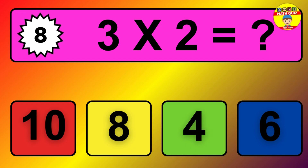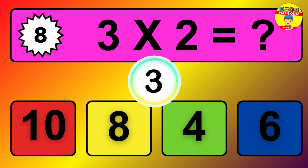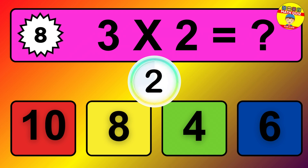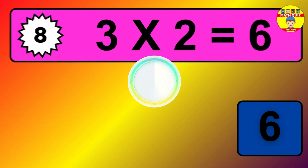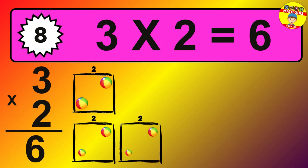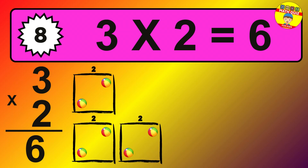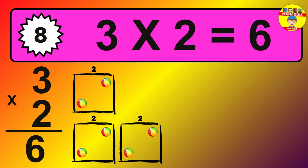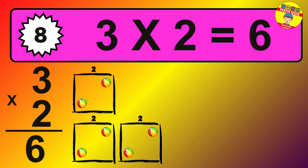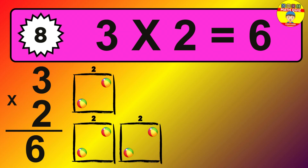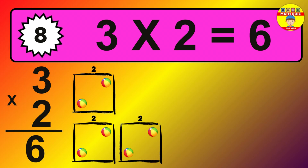Question 8. 3 times 2 equals what? The answer is 3 times 2 is 6. To calculate, we have 3 groups with 2 balls each one. So, how many balls do we have? 6 balls.